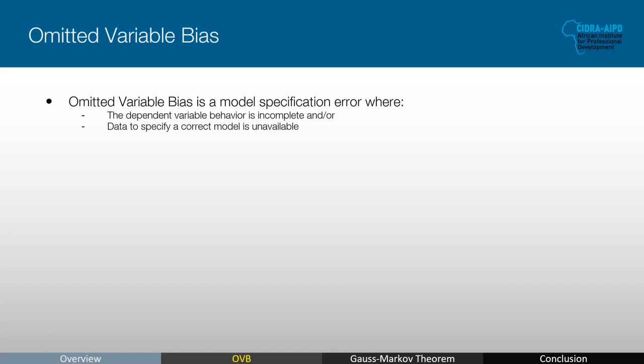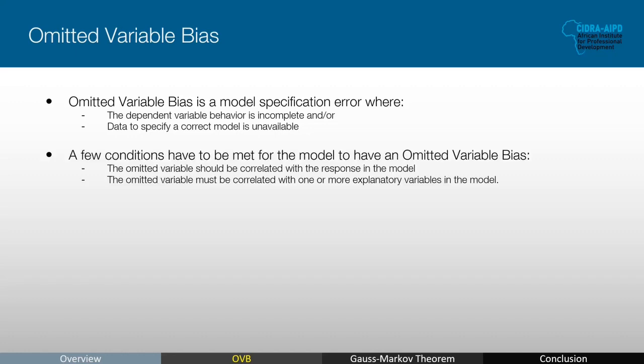Omitted variables bias is a model specification error and it occurs when the model is inadequate. If you are missing an important variable, then the model assumptions and stats won't be satisfied. The behavior may not have been studied or observed long enough, or the data may not be available. There are a few conditions for a model to have an omitted variable bias: the missing variable should be correlated to the response, and the omitted variable must be correlated with one or more explanatory variables already in the model. This correlation does not have to be strong, because if it is strong, you may have the problem of multicollinearity.